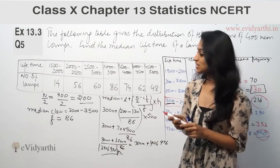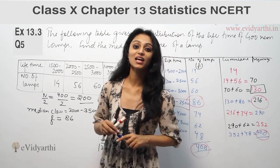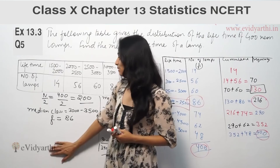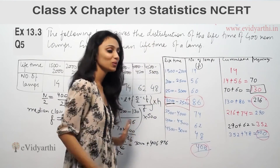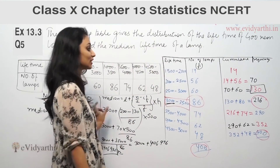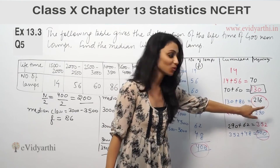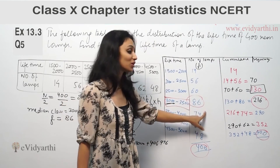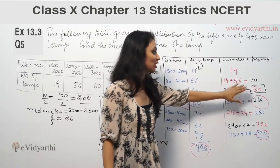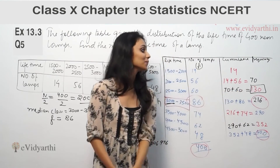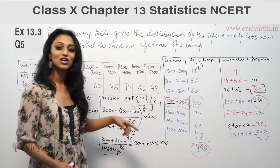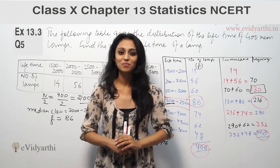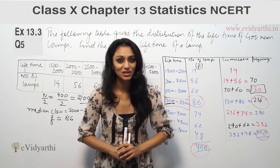So this was question number 5, exercise 14.3. The key steps are: draw the table, find n by 2, identify the median class where the just-greater cumulative frequency lies, then apply the median formula using the lower limit, cumulative frequency, class frequency, and class size. If you liked the video, please like and subscribe. Goodbye.